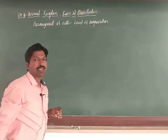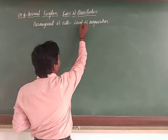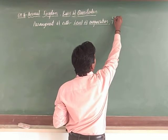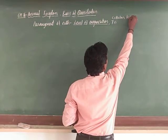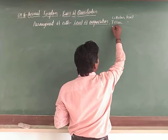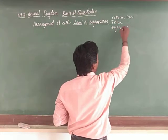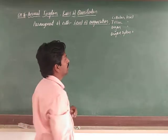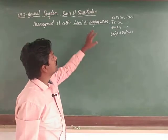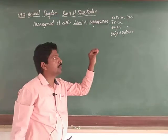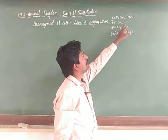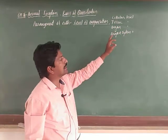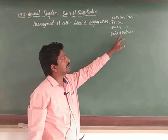The first criterion is level of organization. In the previous video we discussed the levels of organization: cellular level, tissue level, organ level, and organ system level. In higher animals, organ system level of organization is observed. These levels are based on the arrangement of cells.